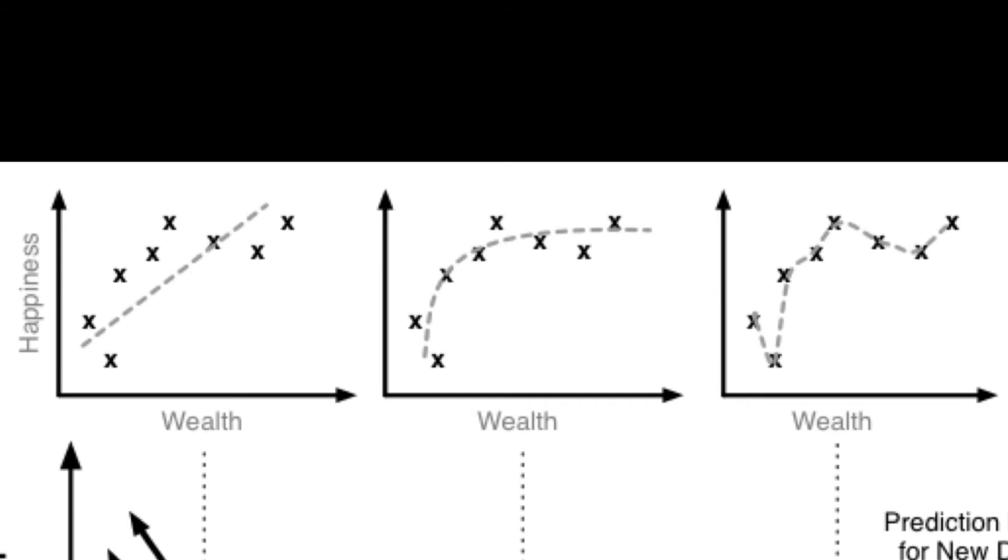Imagine you pull in all these data points of multi-millionaires who suffer from depression. Their happiness points are going to be very low on the scale, but their wealth data points are going to be very high. That doesn't match that linear approach whatsoever.